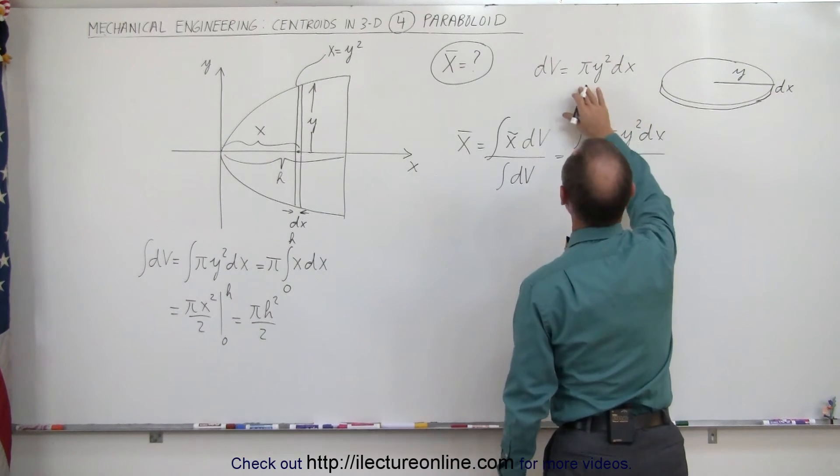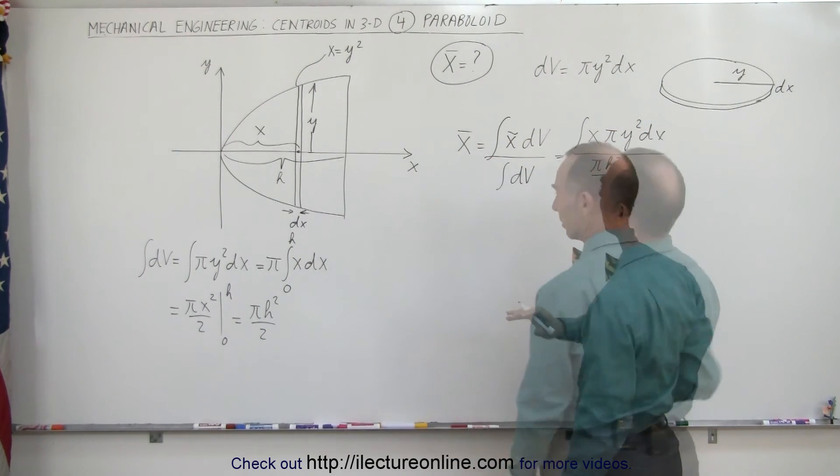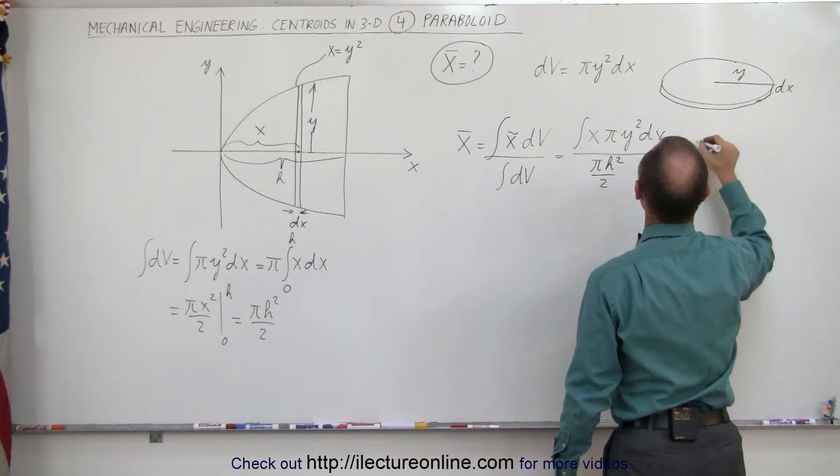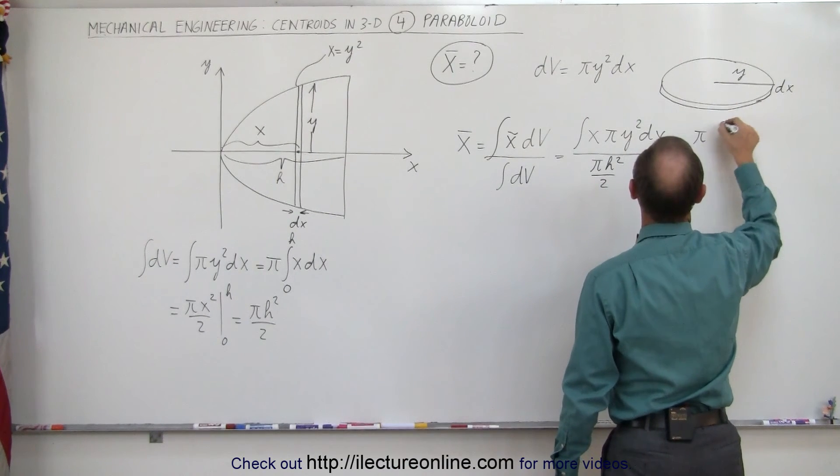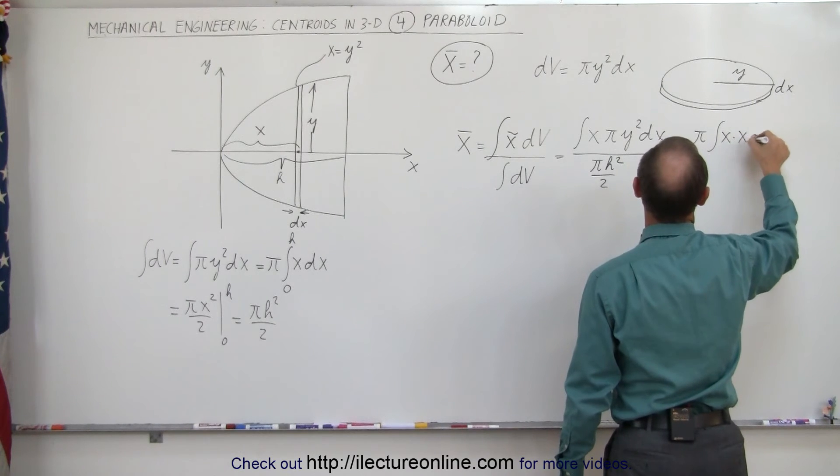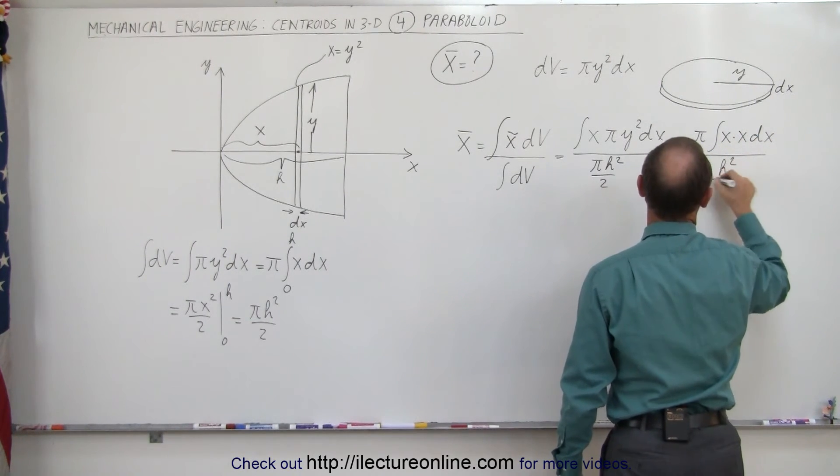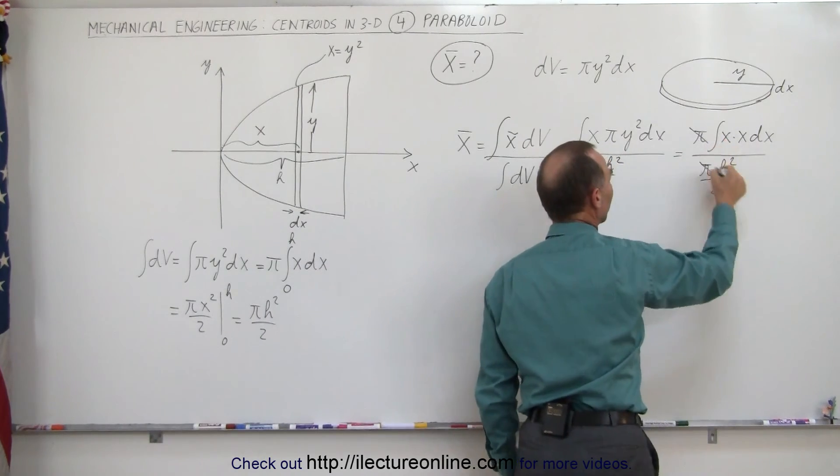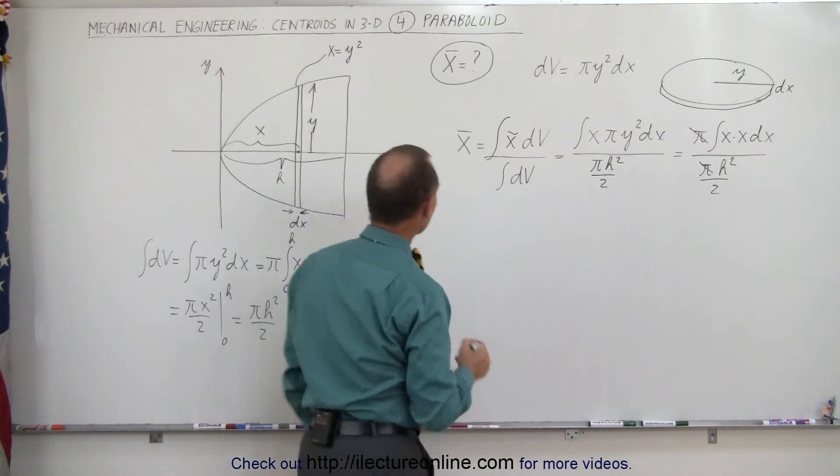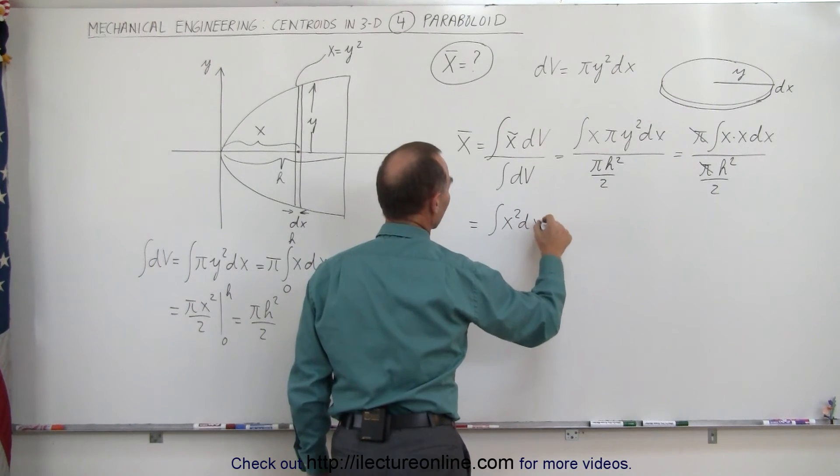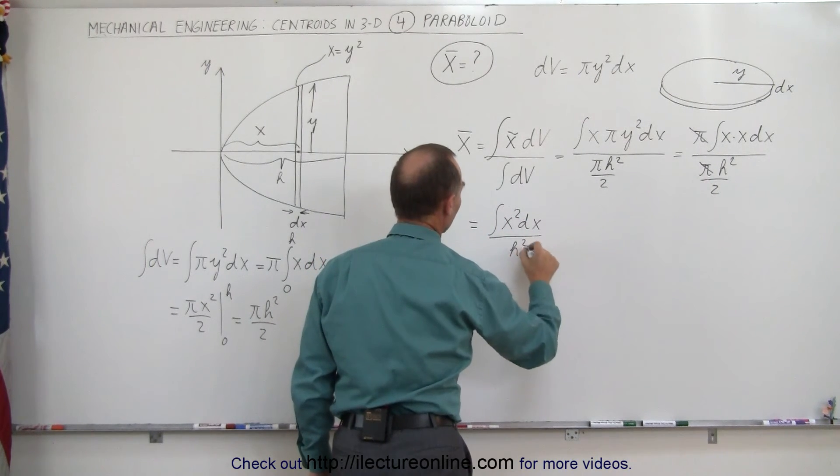And since y² is equal to x... where did I have that? Yeah, right here. y² equals x. Okay, that's equal to π times the integral of x times x times dx divided by πh² divided by 2. And we can get rid of the π's. This now becomes the integral in the numerator of x²dx divided by h² divided by 2.